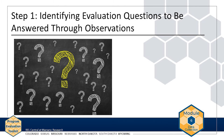As with interviews and focus groups, first identify the evaluation question or questions that can best be answered through observations. Not every evaluation question lends itself to being answered through observational data. For example, a question about how useful participants perceive a program to be might be best answered through an interview or focus group, but a question about how many students attended AMP could be answered through observation.